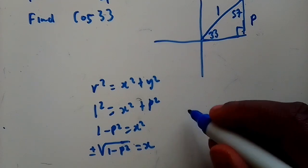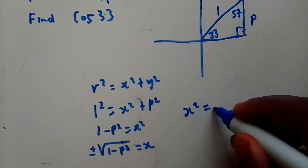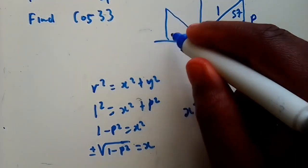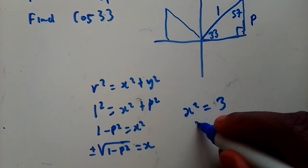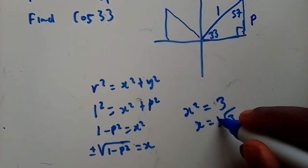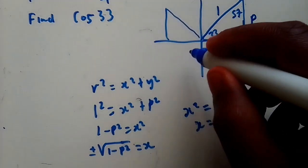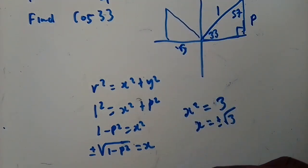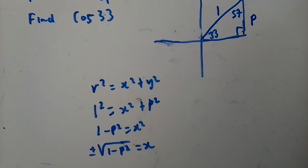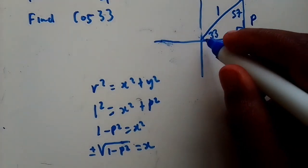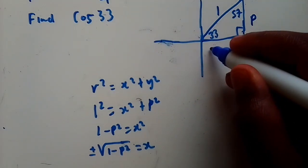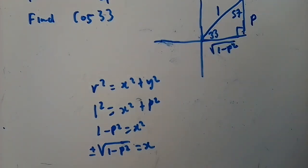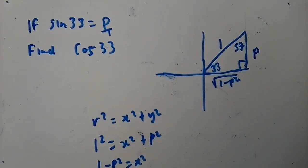For example, if x² = 3, when you square root always write ±√3, then choose the correct sign based on the diagram. In this case the answer is positive because the side must be on the positive side of the x-axis. So x = √(1 - p²).